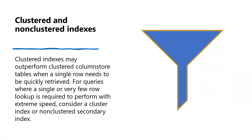The other index types are clustered and non-clustered indexes. Clustered indexes may outperform clustered column store tables when a single row needs to be quickly retrieved. For queries requiring a single or very few row lookups with extreme speed, consider a clustered index or non-clustered secondary index. The disadvantage is that only queries using highly selective filters on the clustered index column benefit.